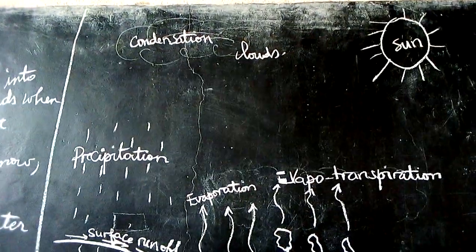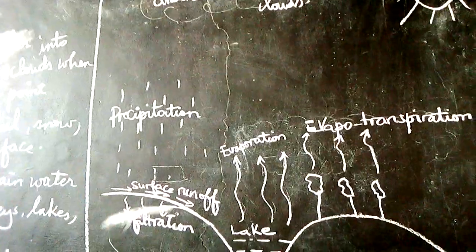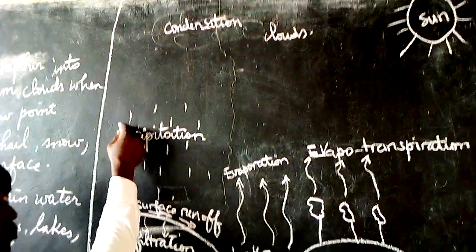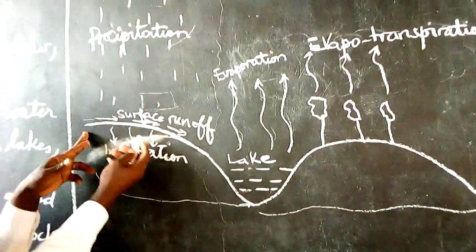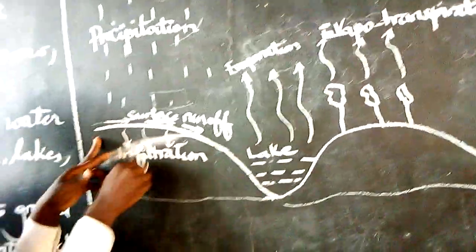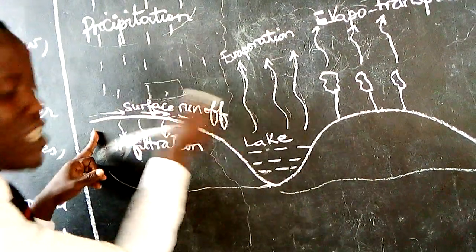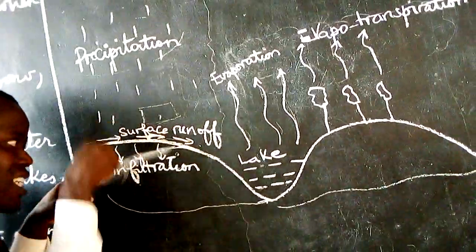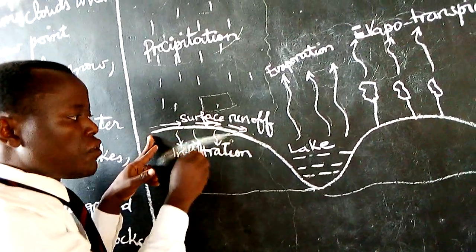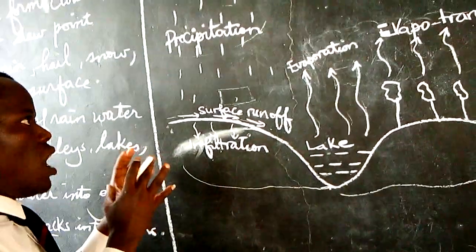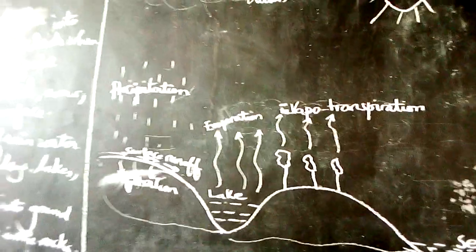Remember, when those clouds become too heavy, they will fall as rain — that process is precipitation. The rainwater which falls on the surface, some of it will infiltrate, and others will flow on the surface. That flow is surface runoff, and the water which enters through pores or cracks is delivered as infiltration. I think these processes of the hydrological cycle of water are very easy to understand.